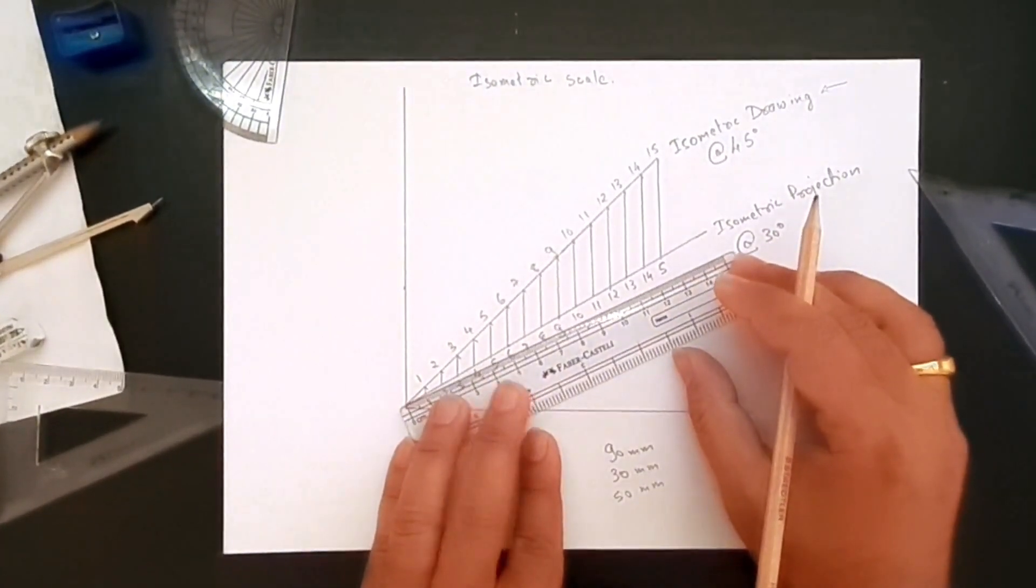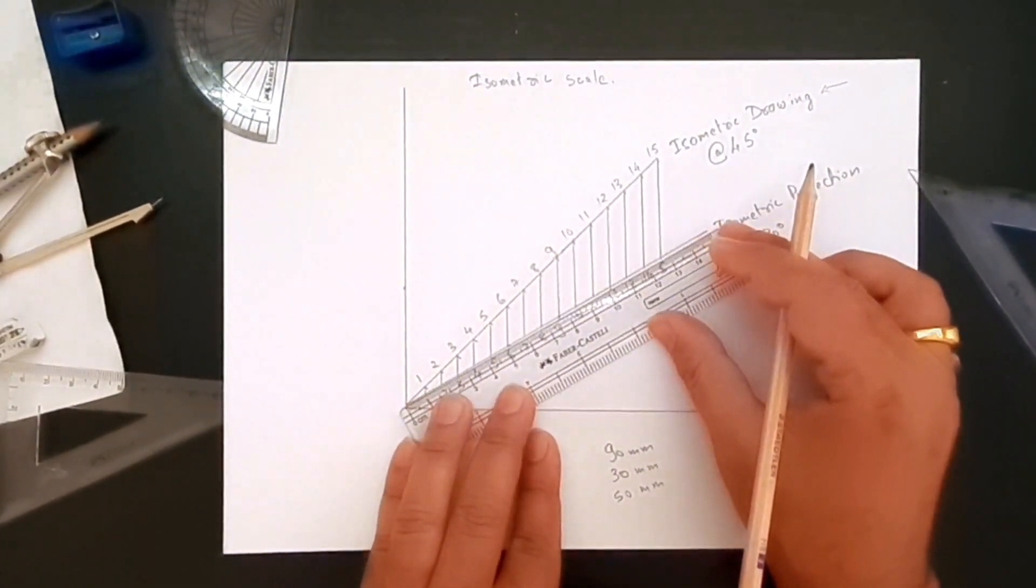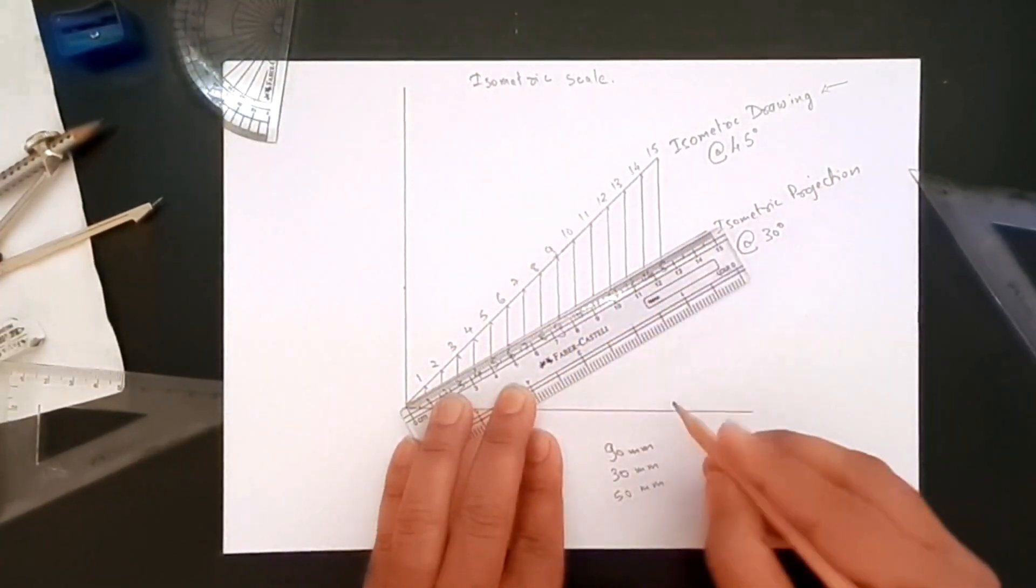You can go in and measure how much is that 90. It comes out to be 76 millimeters. So 90 millimeters becomes 76 millimeters here on this scale.